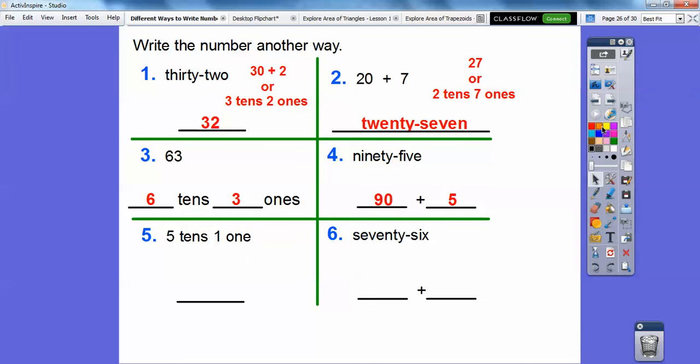And then 5 tens and 1, well, 5 tens is 50, so 50 and 1 is 51. We could also write that as 51, or 50 plus 1. 76, so we're going to write that as 70, 70 plus 6. All right, you guys, I hope that lesson makes sense.